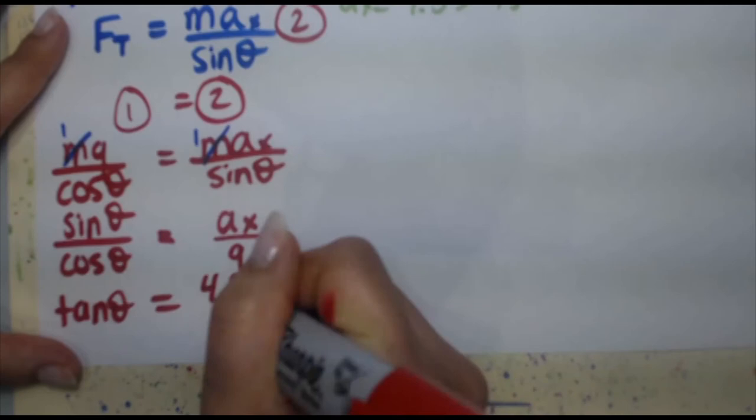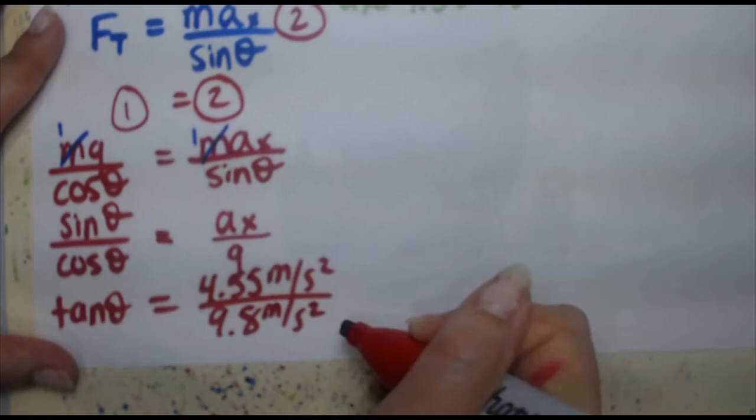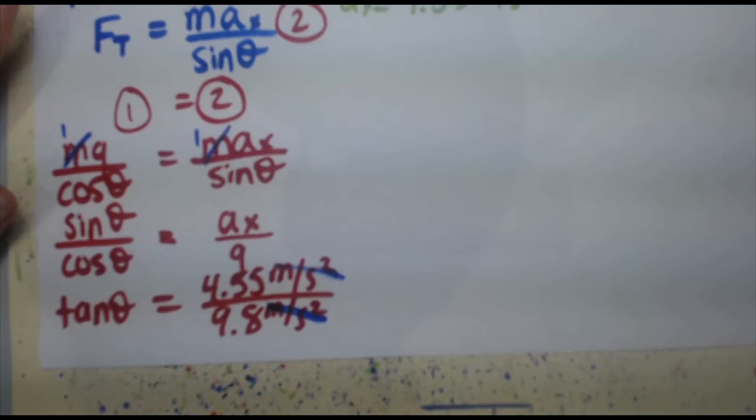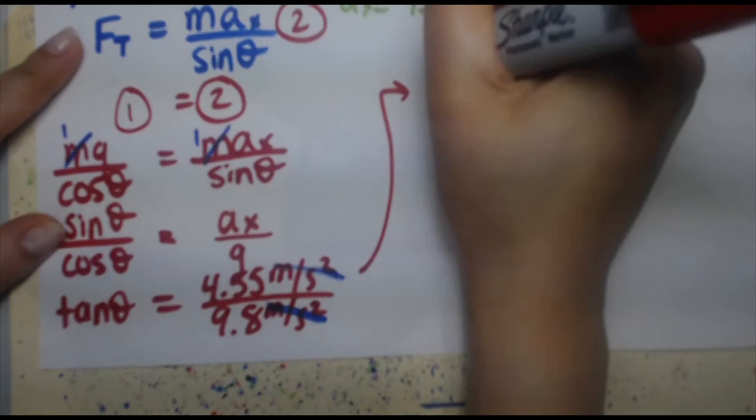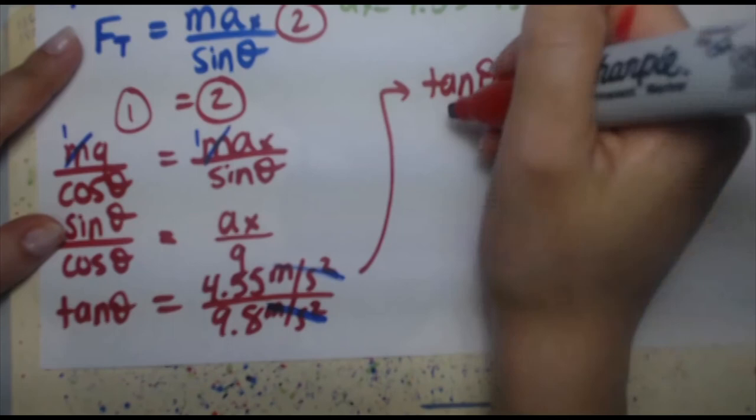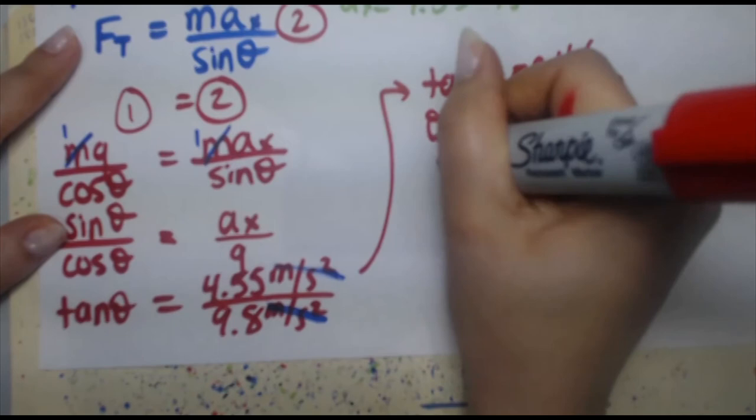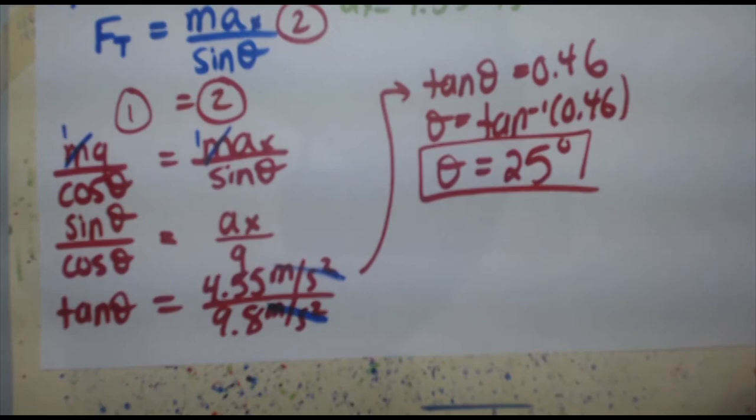So tan theta is equal to a x, which is 4.55 meters per second squared, over g, 9.8 meters per second squared. How convenient, your units cancel out meters per second squared. So tan theta equals 0.46. You find theta by taking the inverse tangent of both sides. And when you do that, you are going to get theta is equal to 25 degrees.